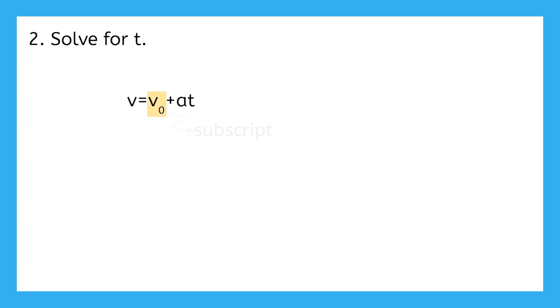This 0 below the V is called a subscript, and it acts as a label. So this term is called V0. Subscripts are a way that we can label values that are different, but often related to each other.